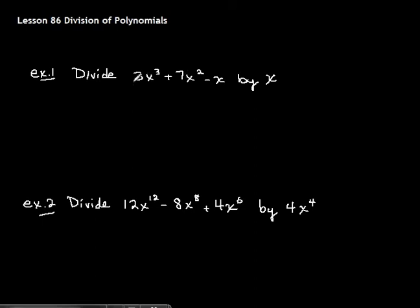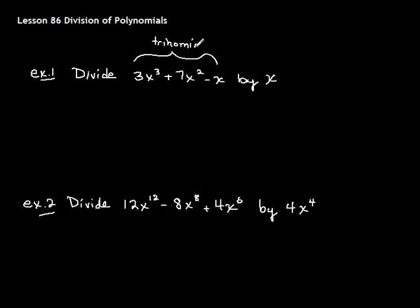Division of polynomials. The first one we're going to do is an easy one. It's dividing a trinomial — remember, if it has three parts, it's called a trinomial. We're going to divide a trinomial by a monomial. Whenever you divide by a monomial, all you do is divide each of the parts of the trinomial — each term — by the monomial. So this starts out really easy.